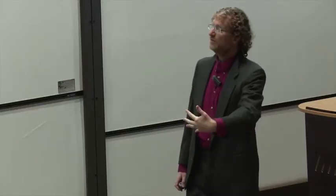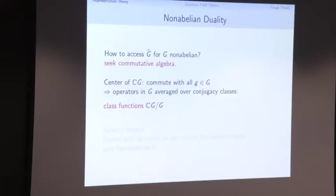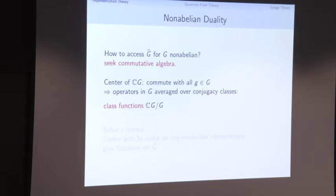Let's take this example seriously. Our theme was: to see geometry, look for commutative algebra. In order to act as the dual for a non-abelian group, we look for a commutative algebra to act. What's a natural source? We have the big algebra of all operators — it's no longer commutative — but we look at its center: operators that commute with all elements of the group algebra. That's the center of the group algebra. For it to commute with all group elements means the smeared combinations must be invariant under conjugation — functions constant on each conjugacy class, called class functions.